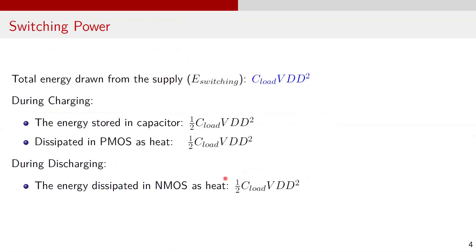Let's summarize what we learned from switching power dissipation computations. The total switching power drawn from the power supply is C_load VDD². During the charging cycle, when the input transitions from 1 to 0, the capacitor charges, storing (1/2) C_load VDD² as potential energy. During this process, the PMOS transistor dissipates an equivalent amount, (1/2) C_load VDD², as heat. During the discharging cycle, when the input transitions from 0 to 1, the capacitor discharges to 0V, resulting in (1/2) C_load VDD² being dissipated as heat through the NMOS transistor.